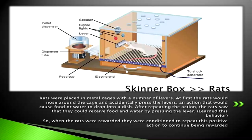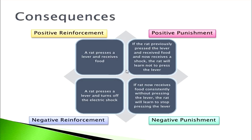In the Skinner box or Operant box, there is a rat, and by pressing the right lever, the rat will be delivered a food pellet or receive an electric shock. Rats placed in these metal cages would initially by chance press the lever, causing food or water to drop into a dish. After repeating the action, the rat learned it could receive food and water by pressing a particular lever. A rat pressing the lever and receiving food is positive reinforcement; pressing the lever and turning off an electric shock is negative reinforcement.